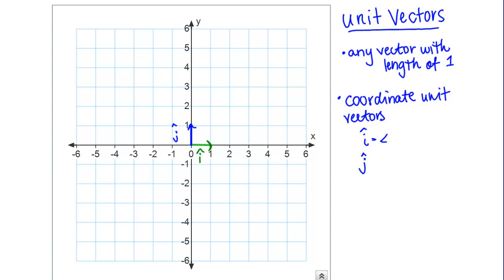i is the vector <1,0>. You can see in the picture it has an x component of 1 and a y component of 0. Then the coordinate unit vector j is the vector <0,1>. It has an x component of 0 and a y component of 1. Why are these useful?